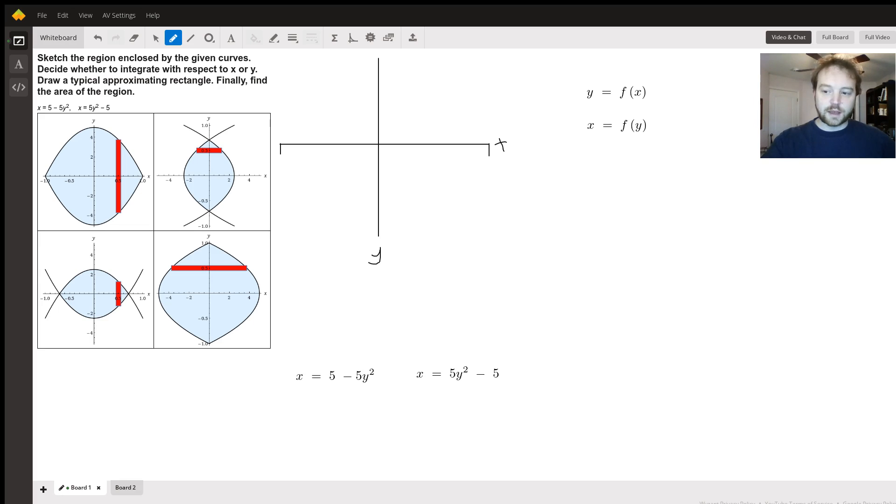So in that case, if you say x is a function of y, both of these are parabolas, it's fairly easy to see, right? One is negative 5y squared, so it's going to open towards the negative x axis. And then the other one is 5y squared, which is going to open towards the positive x axis.